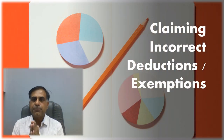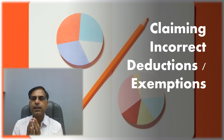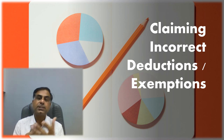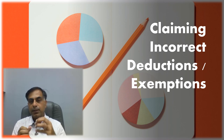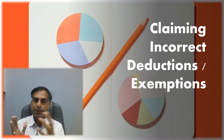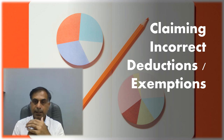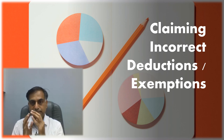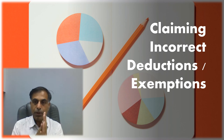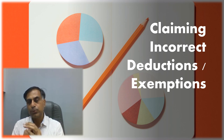The first mistake is that assessees generally claim incorrect deductions or exemptions in their return. Are you sure about the amount of deduction you are claiming in the ITR, whether it is under Section 80C for investments like LIC premium, PPF contribution, or exemptions like HRA? These deductions and exemptions should be as per the provisions of the law, not only with reference to the quantum but also with reference to genuineness.